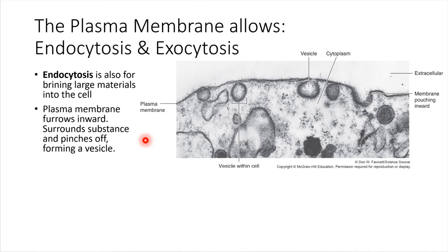Another way that cells can take things internal is by endocytosis. This is another way that large molecules and materials can be brought into the cell, but it's a little bit different style. Instead of using pseudopodia, what happens is the plasma membrane sort of bends inwards.